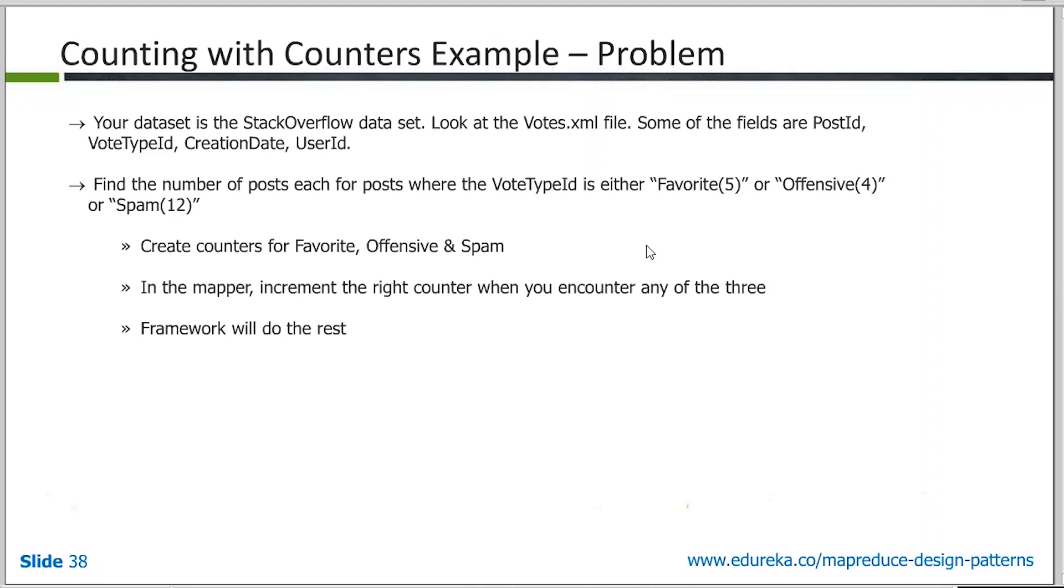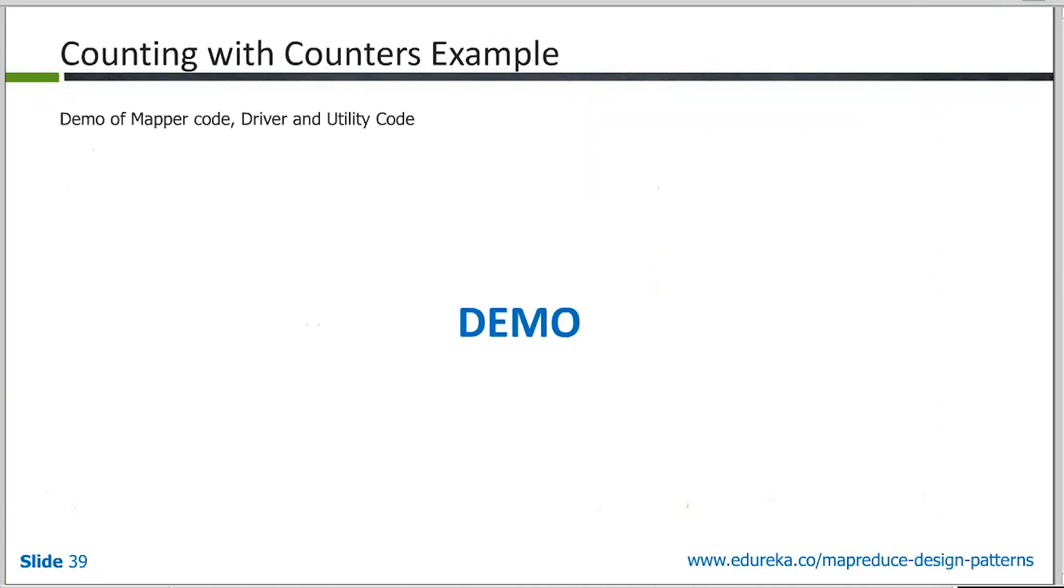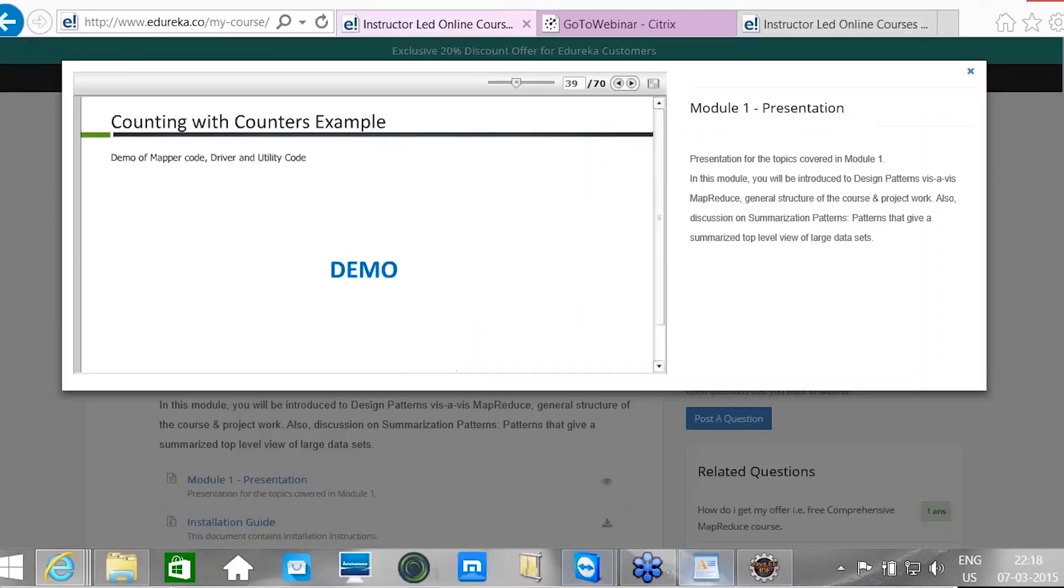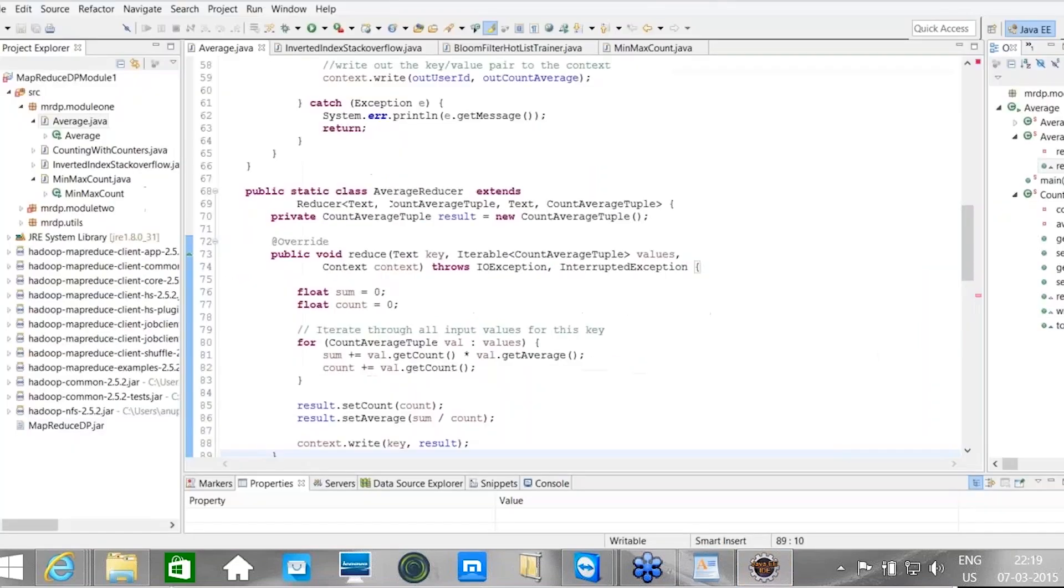Let's look at one of the examples for counting the counters problem. The data which we'll use for this is votes.xml. Again, part of the Stack Overflow data. Some of the fields in this is post ID, vote type ID, creation date, and user ID. And we are going to create counters for three different varieties of vote ID type. We will create counters for favorite, offensive, and spam.